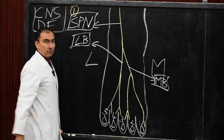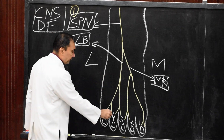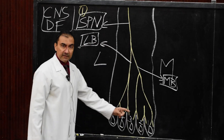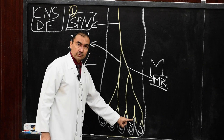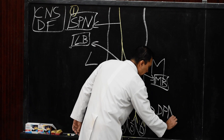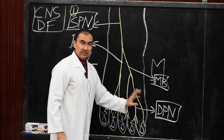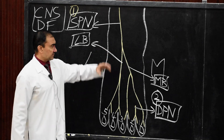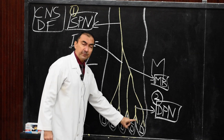The second nerve supplying the cutaneous structure of the dorsum of the foot is the deep peroneal nerve, which supplies the cleft between the first and second digit — that is, the cleft between the great toe or hallux and the second toe. So this is the second nerve providing cutaneous sensation to the dorsum of the foot. First is superficial peroneal nerve; second is deep peroneal nerve, supplying the territory of the cleft between the first and second digit.